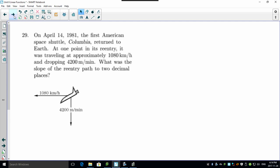Look, I found this question, number 29. This is actually a question from an old test of mine. The cool thing about it is, read it. It says on April 14, 1981 - and I remember this - the first American space shuttle called Columbia returned to earth. Now look at this. At one point of reentry it was traveling at approximately 1080 kilometers an hour. Oh my goodness, that's incredibly fast. Yeah, faster than most cars, right? Yeah, maybe just a bit. But what's also interesting is look at this - it is also dropping. So it's dropping at 4200, but look, this says meters per minute. This is kilometers an hour, this is meters per minute.